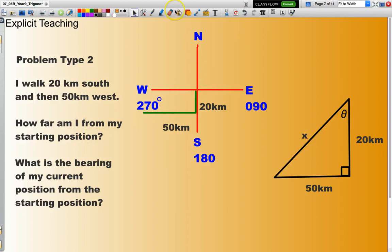And the question's asking, how far am I from my starting position? In other words, if I wanted to go from here to here, the shortest distance, the distance there, how far is that? And what is the bearing? In other words, what is the bearing going all the way around to there?